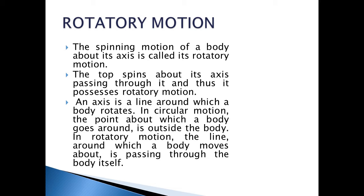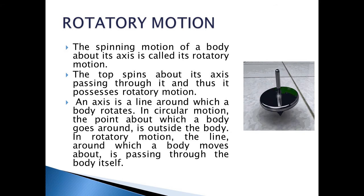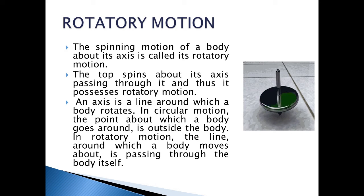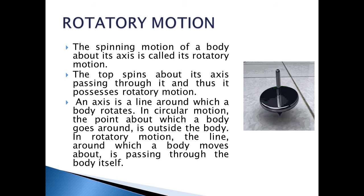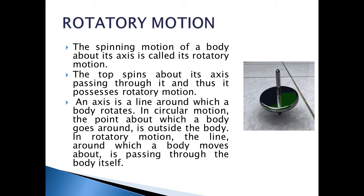The spinning motion of a body about its axis is called its rotatory motion. A top spinning about its axis passing through it possesses rotatory motion. An axis is a line around which a body rotates. In circular motion, the point about which a body goes round is outside the body. In rotatory motion, the line around which a body moves is passing through the body itself.